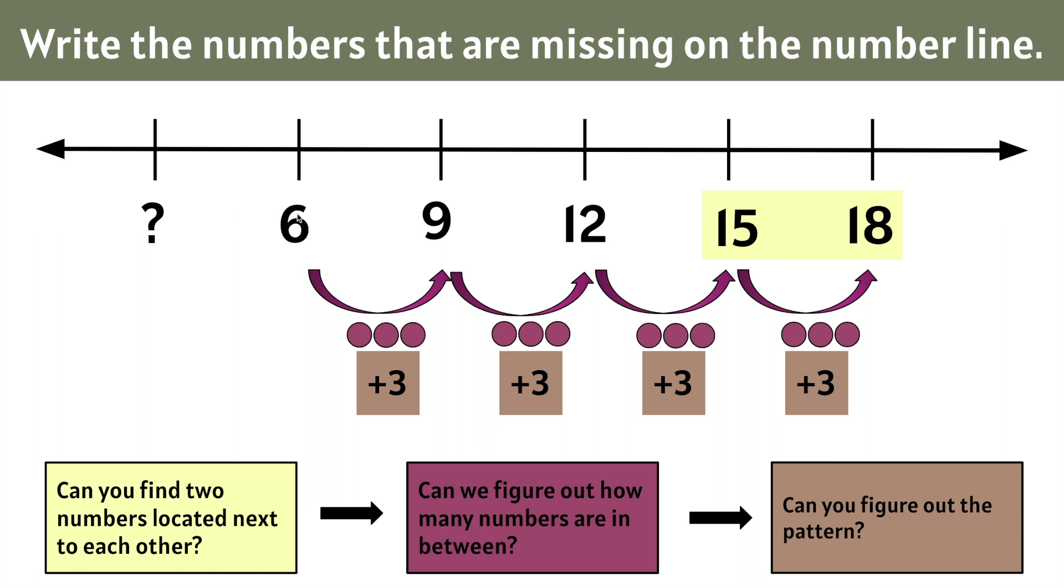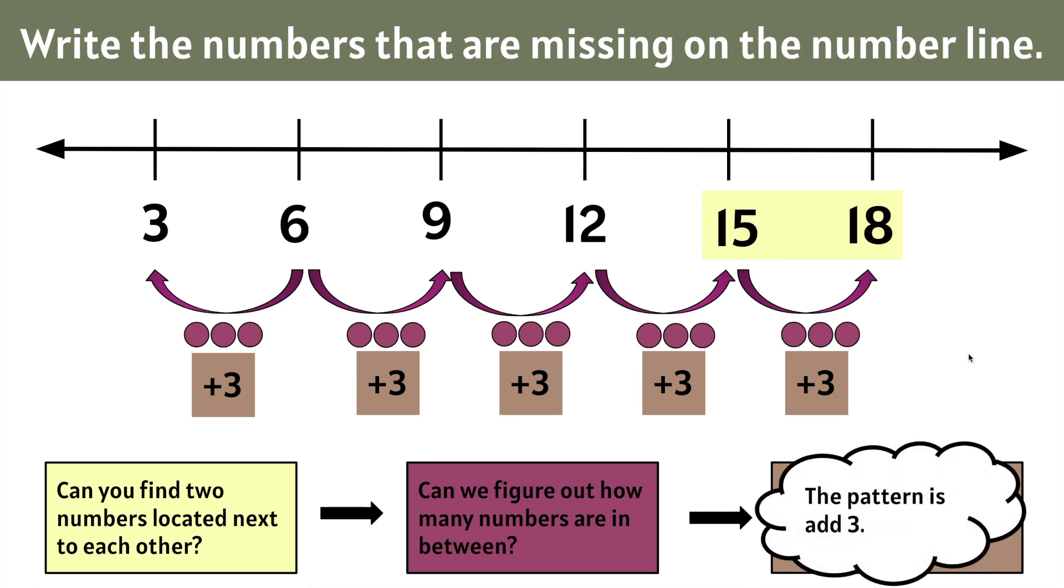Now we have to figure out what number would go before the 6. If we add 3 we would have 9 here. We can't have 9, 6, 9. That means this number has to be smaller, so we would simply subtract 3 to go back. 6 take away 3 is 3. But really we're going from 3 to 6 which means we're adding 3. Each time on this number line we would add 3, so the pattern is add 3.